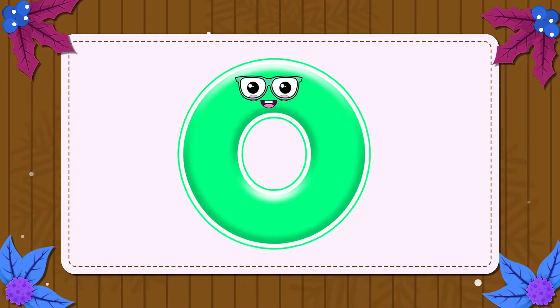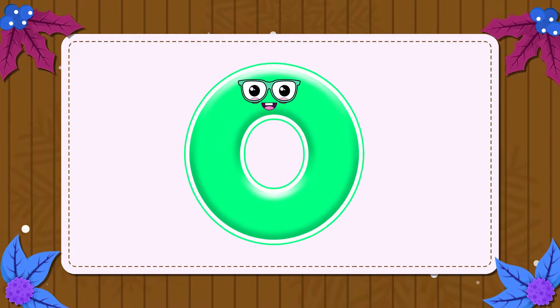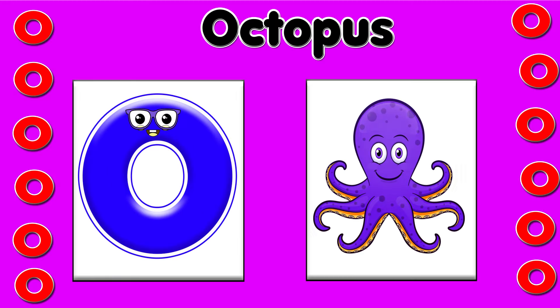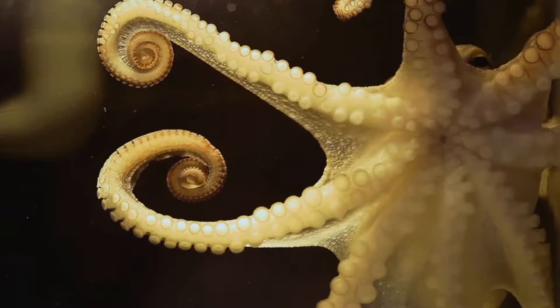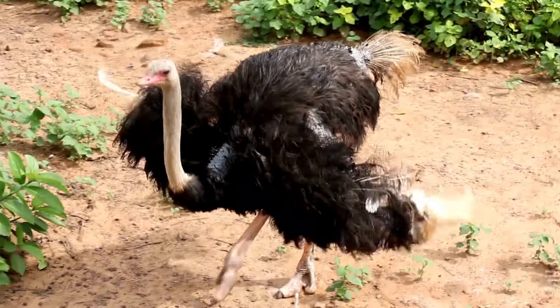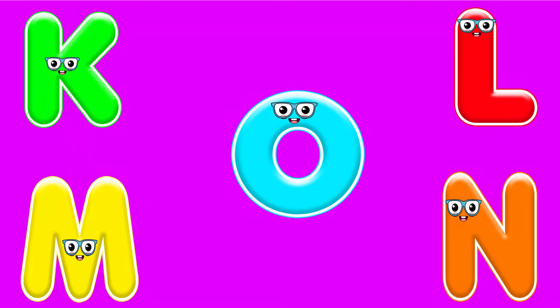O. This is the letter O. O is for octopus — o, o, octopus. O is for ostrich — o, o, o.